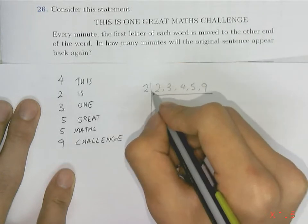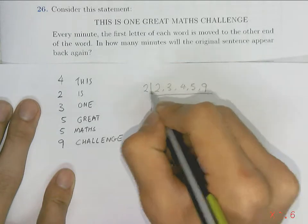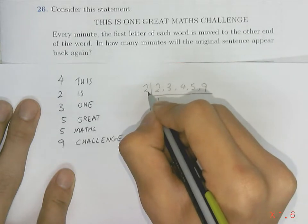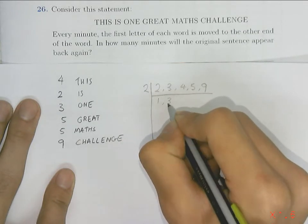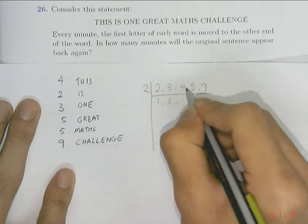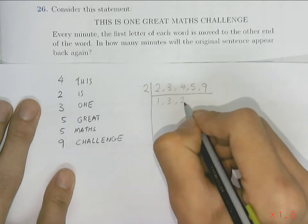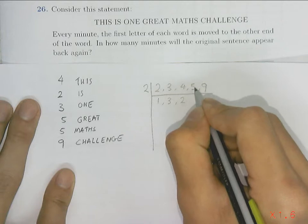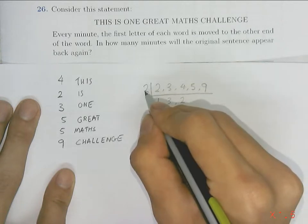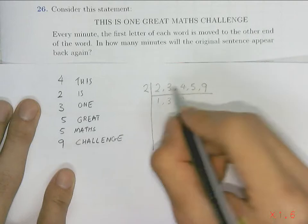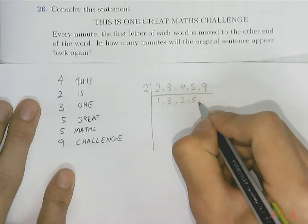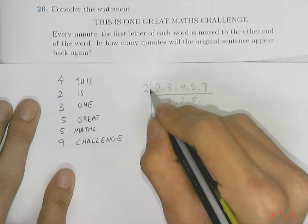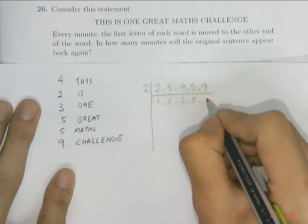So two divided by two will give one. Three cannot divide by two, it's not divisible, so it will just leave as three. Four divided by two will give me a two. Five divided by two is not a whole number so it's not divisible, so I will just leave it as five. Likewise, nine is not divisible by two, so I will leave it as nine.